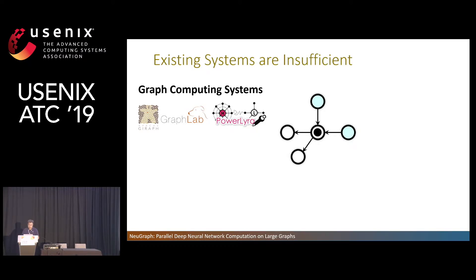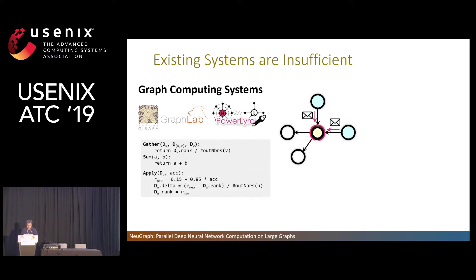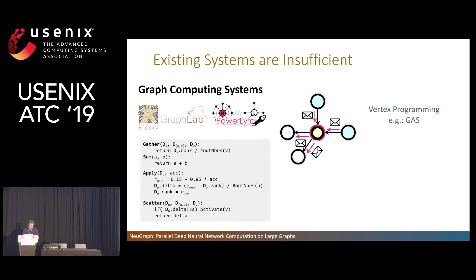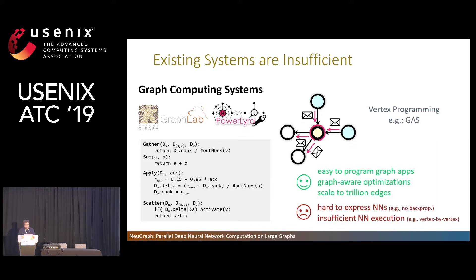There are also many graph engines for large-scale graph computing. Taking PowerGraph as an example: we define the gather function to describe how a vertex gets information from its in-neighbors, the apply function to update itself with gathered information, and the scatter function to send messages to out-neighbors. This vertex programming model means graph engines can know each vertex's neighbors. It's easy to program graph applications like PageRank and scale to very large graphs. However, these systems are hard to support neural networks and insufficient for neural network computation due to the lack of dataflow abstraction.